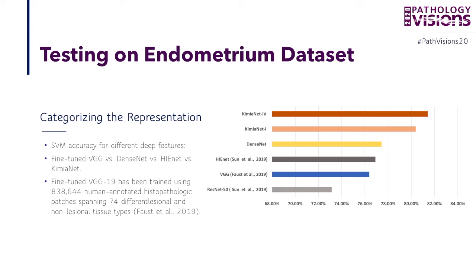We also tested on the endometrium dataset — which is just patches, no WSIs — taking the representation and using a classifier like SVM to classify it. We compared to literature and to a fine-tuned VGG that was trained with more than 800,000 human-annotated histopathology patches across 74 different lesional and non-lesional tissue types. KimiaNet in any configuration was much better than DenseNet and any other solution tested.